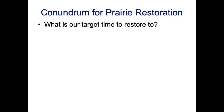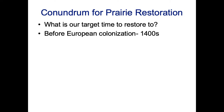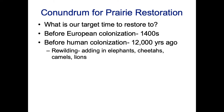There is a conundrum for prairie restoration. You need to decide what your target is — what do you want the endpoint to be? You could target before European colonization, like the 1400s. Or you could target before human colonization, so before Native Americans were here, which is about 12,000 years ago.